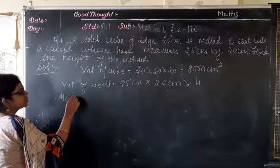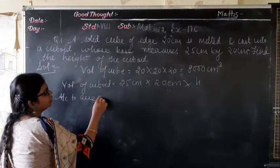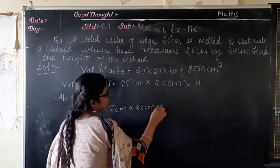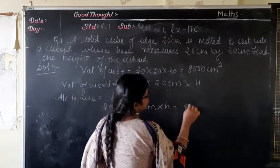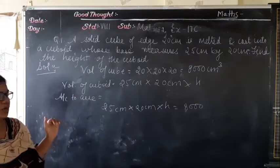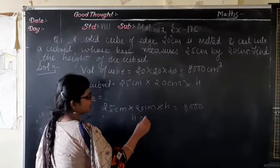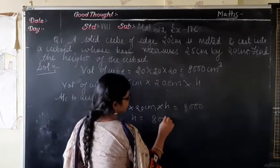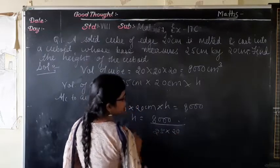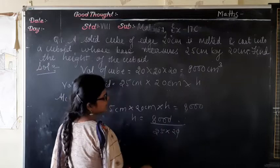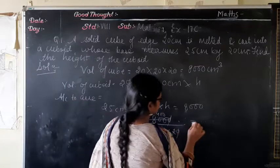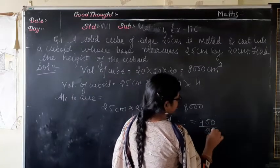According to the question: 25 cm × 20 cm × h = 8000, because before melting it equals a cube and after melting it forms the shape of the cuboid. From here, h = 8000 ÷ (25 × 20). This gives 400 ÷ 25.